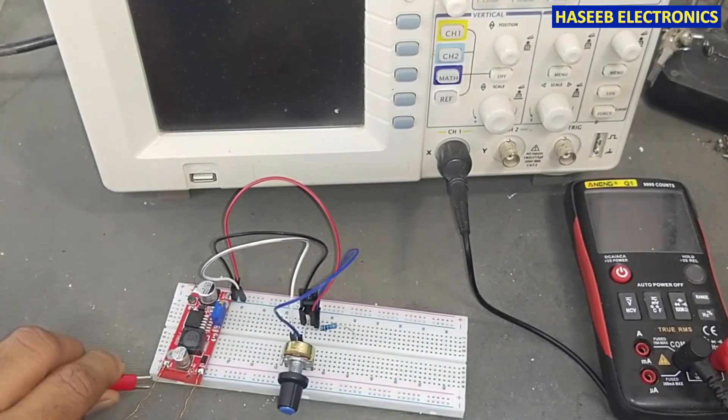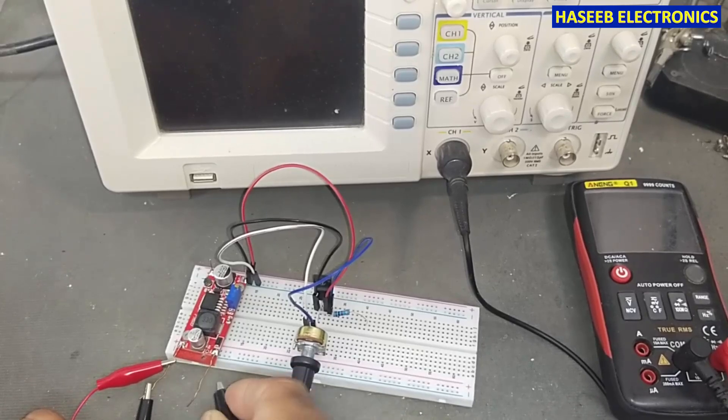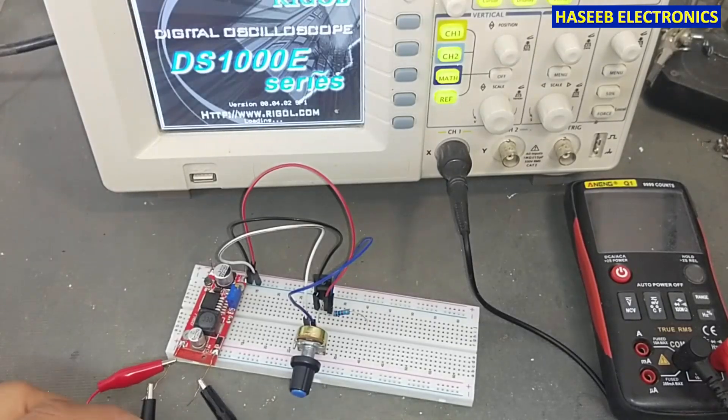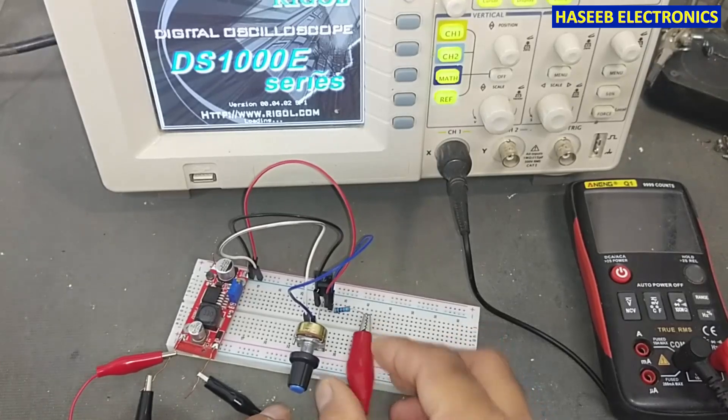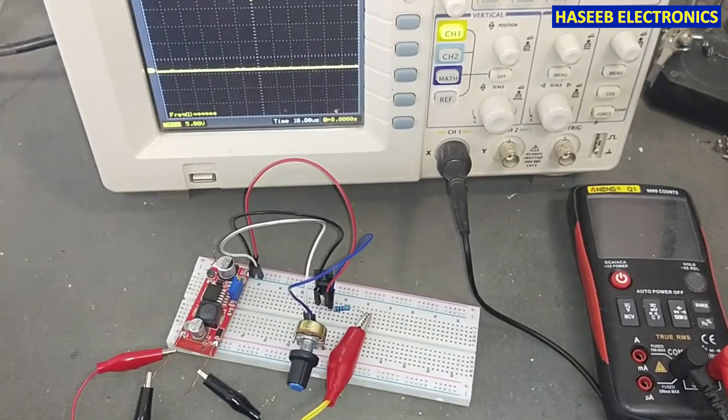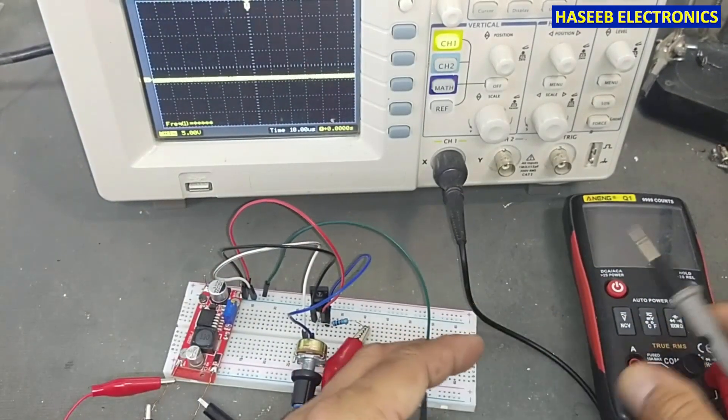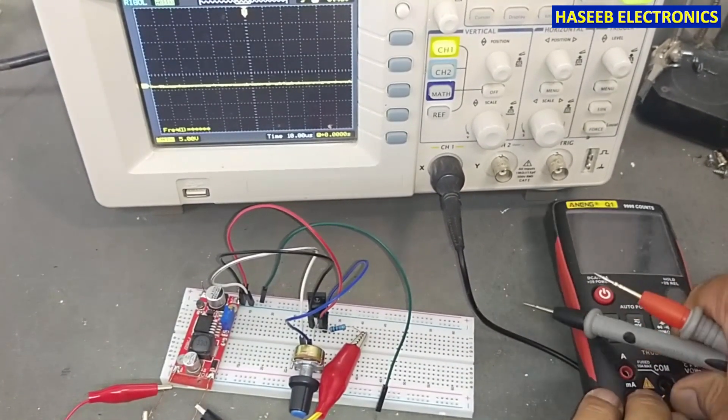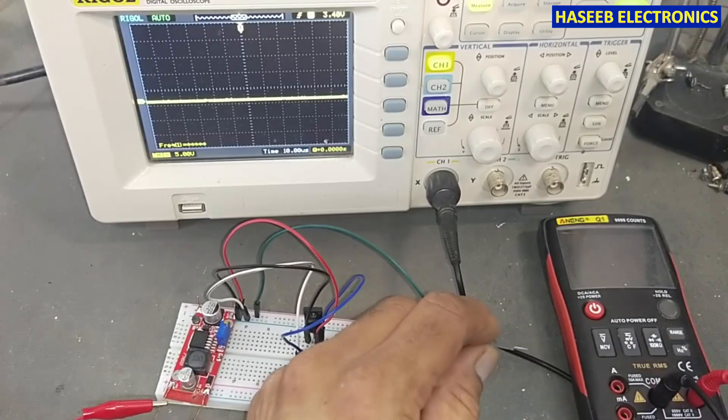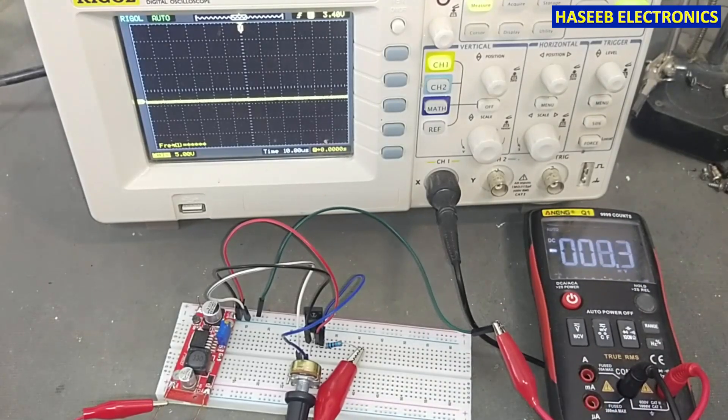I am connecting 5 volt here and this is the ground side. I will turn on the oscilloscope. At this end I connected 12 volt positive. I will monitor the DC voltage. This is the positive terminal. We will monitor the VCC voltage, at which voltage this IC will start functioning.